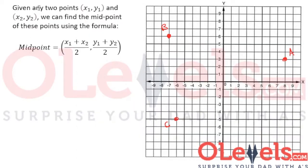Well, given any two points (x1, y1) and (x2, y2), we can find the midpoint of these points by using the formula: midpoint equals (x1 + x2)/2 and (y1 + y2)/2. Let's find the midpoint between point A and point B as examples.